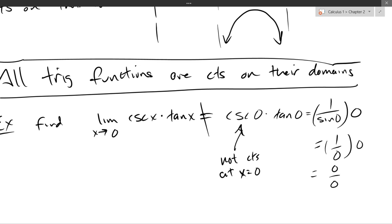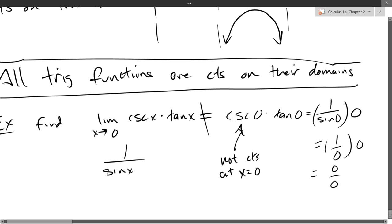We haven't done many limits with trig functions before. What did you do way back when you did trig identities? There are about four or five strategies you used. What can we do with tangent and cosecant? Let's write them with sines and cosines — maybe we'll get lucky and things will cancel out nicely. Cosecant is 1 over sine.